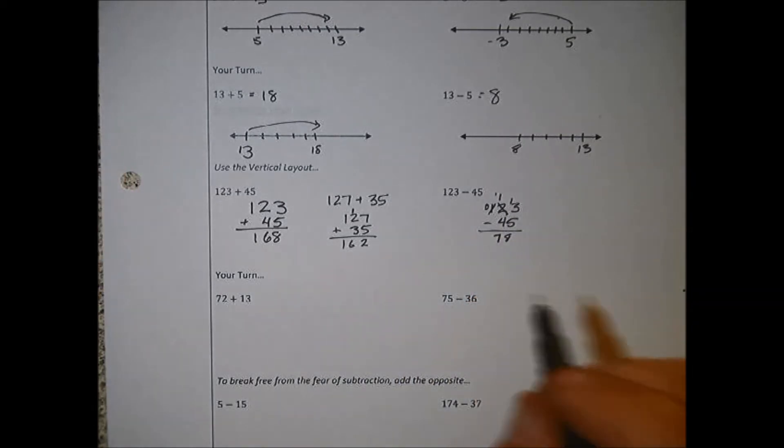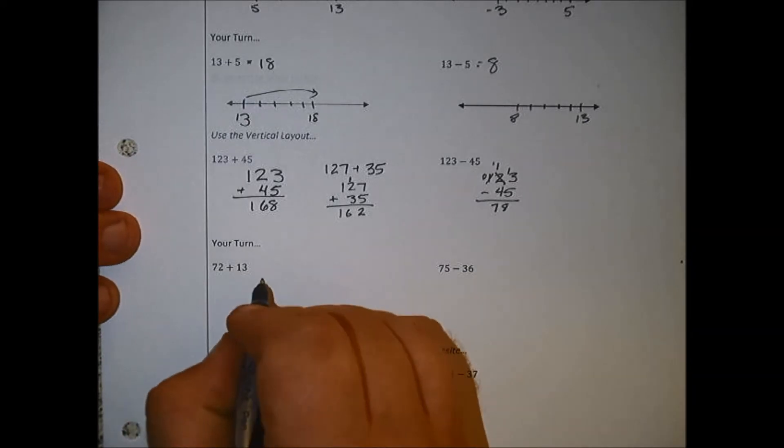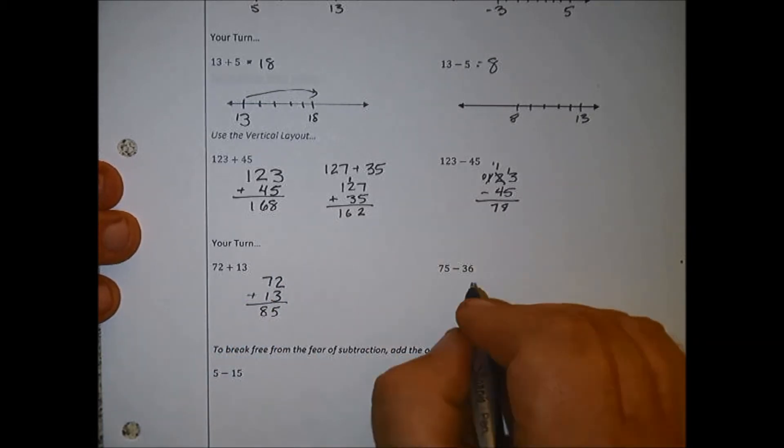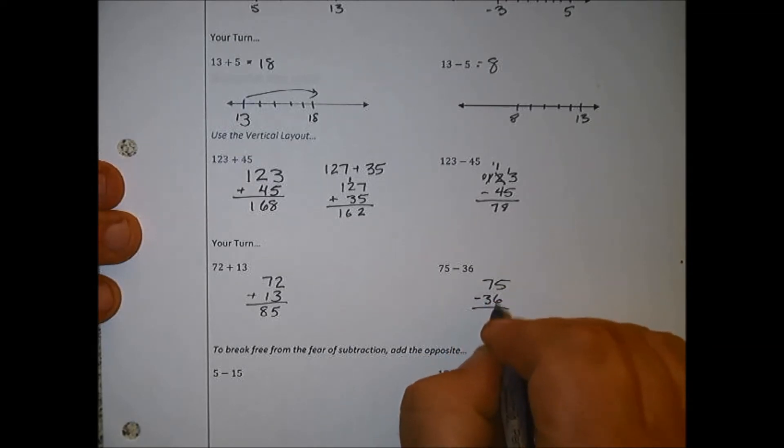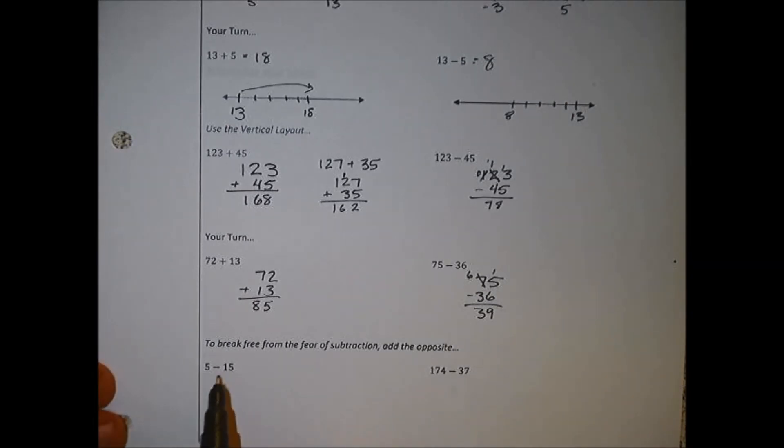Go ahead and pause the video, try the ones below. All right, welcome back. Here you should have gone 72, 13, add them up. 2 plus 3 is 5, 7 plus 1 is 8. Should get 85. 75 minus 36. We can't take 6 away from 5, turn that into a 6, put a 1 up top. 15 minus 6 is 9, 6 minus 3 is 3. You should get 39.